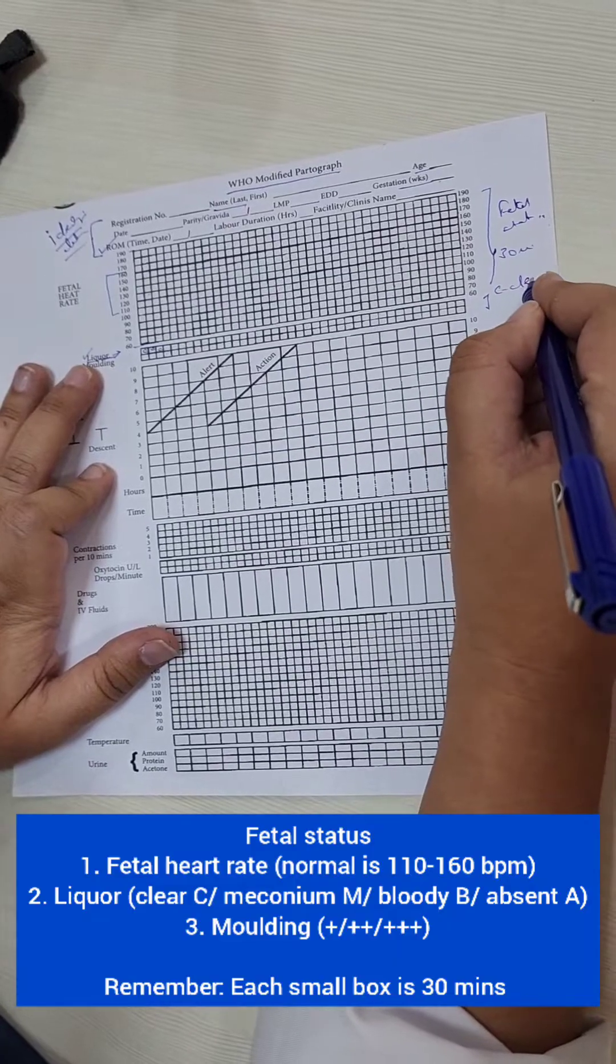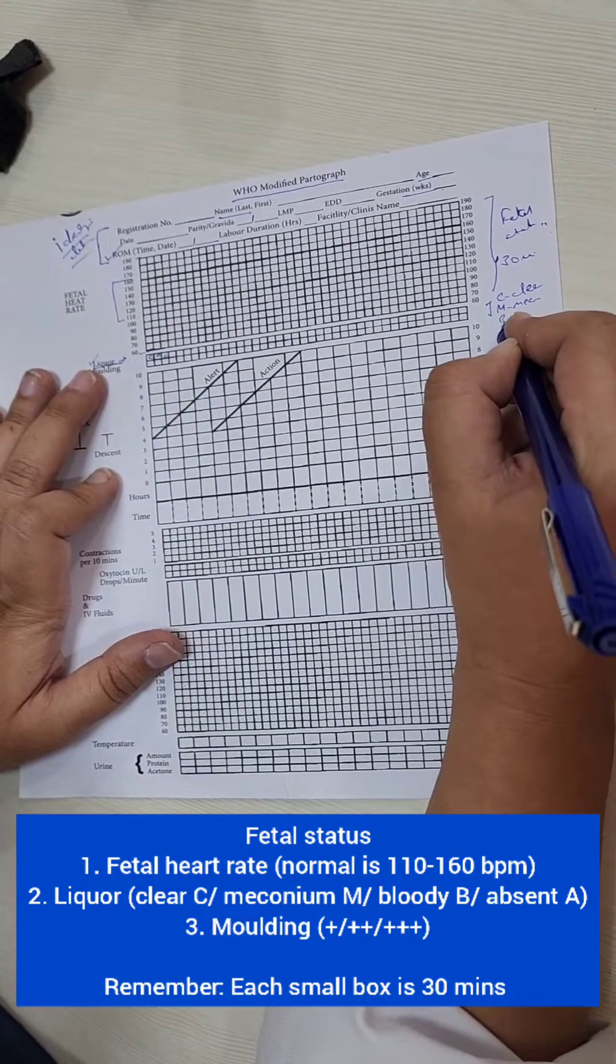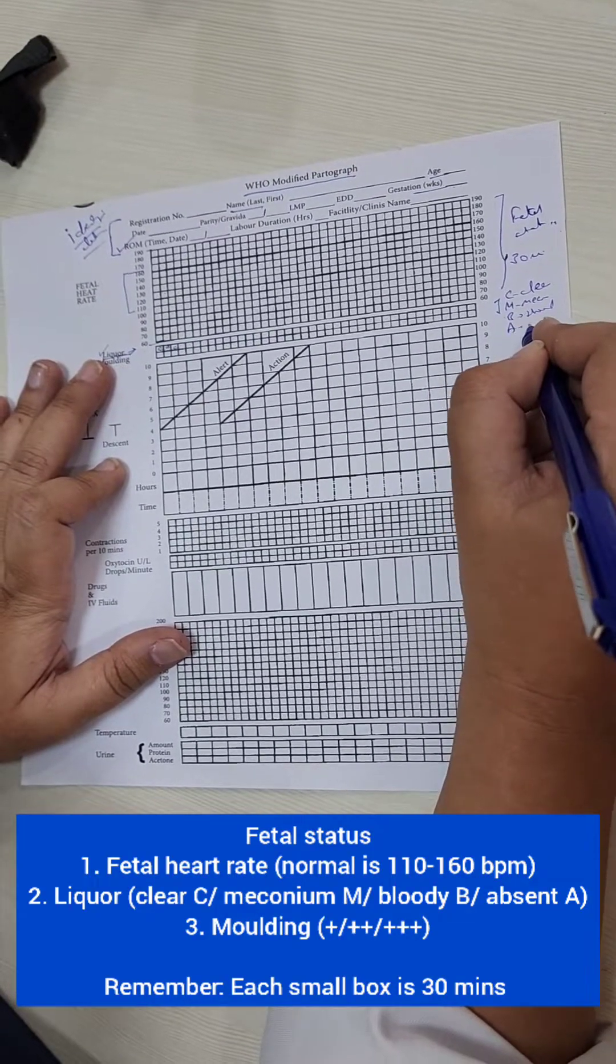So we can have C for clear, we can have M for meconium, we can have B for blood stain which is seen in abruption and we can have A for absent, like oligohydramnios where they may not be any liquor at all.